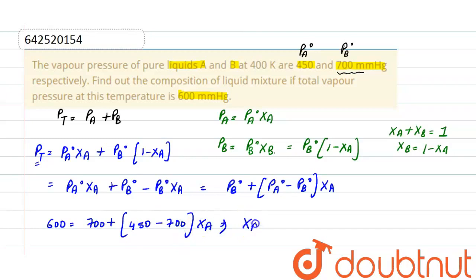After solving, mole fraction of A is 0.40 and mole fraction of liquid B is 0.60, because Xa plus Xb is equal to 1 and mole fraction of A is given, then mole fraction of B will be calculated from this.